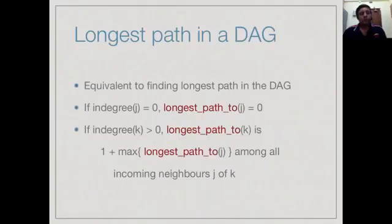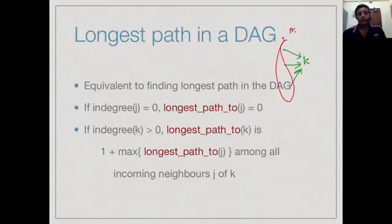We can set up this problem as follows. For any vertex with in-degree 0, the longest path to that vertex is 0 because it can be done immediately. On the other hand, if a vertex k has in-degree not 0, it has some incoming edges. We must wait for all of those to finish. So we take the maximum longest path among all incoming neighbors of k, because that will be the last one to finish, and then add 1 to account for k itself. So the longest path to k equals 1 plus the maximum of the longest paths to all its incoming neighbors.